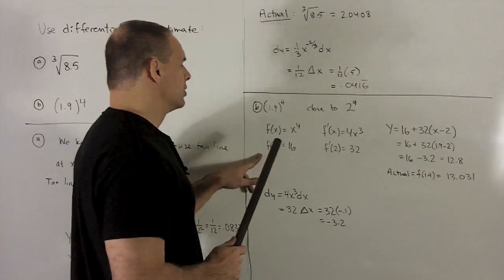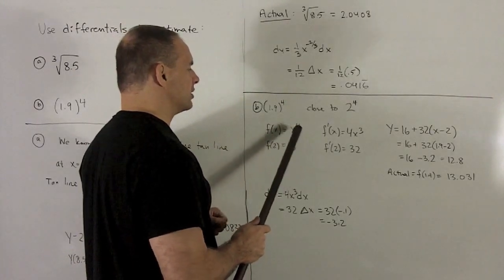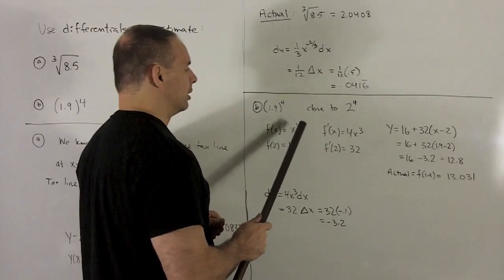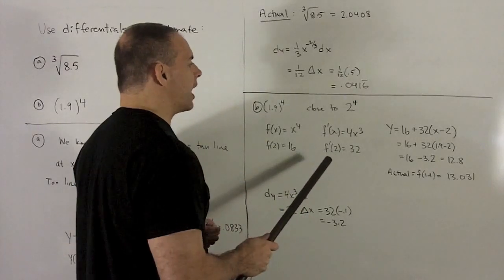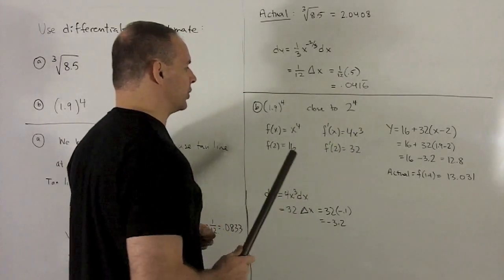f of 2 is 16, so that's my point on the tangent line. We need the slope, so I'm going to have f prime of x equals—bring the 4 down, take 1 off—4x cubed. I put a 2 in there, and so that's going to give me 4 times 8, which is 32.